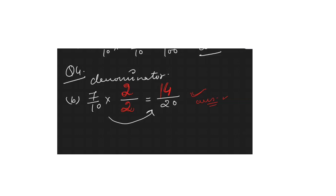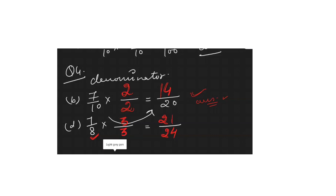One more question: part d, 7/8. Find an equivalent fraction where the denominator should be 24. Cross-check: 24 comes in the 8 times table at position 3, since 8×3 = 24. So multiply numerator by 3 as well: 7×3 = 21. The answer is 21/24.